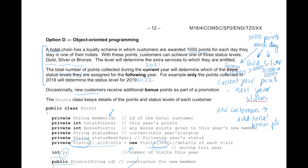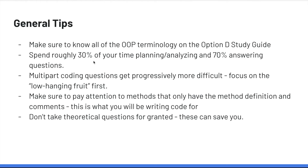Now let's go on to some more general tips for succeeding on the exam. The first is to make sure you know all of the object-oriented programming terminology on the Option D study guide — things like access modifiers, UML diagrams, and the language we use to talk about OOP. This is essential not only for theoretical questions but also for understanding complex coding questions. If you don't know this terminology, check out the Option D study guide where I've created a whole vocabulary bank — if you know all that vocabulary, you should be good to go.